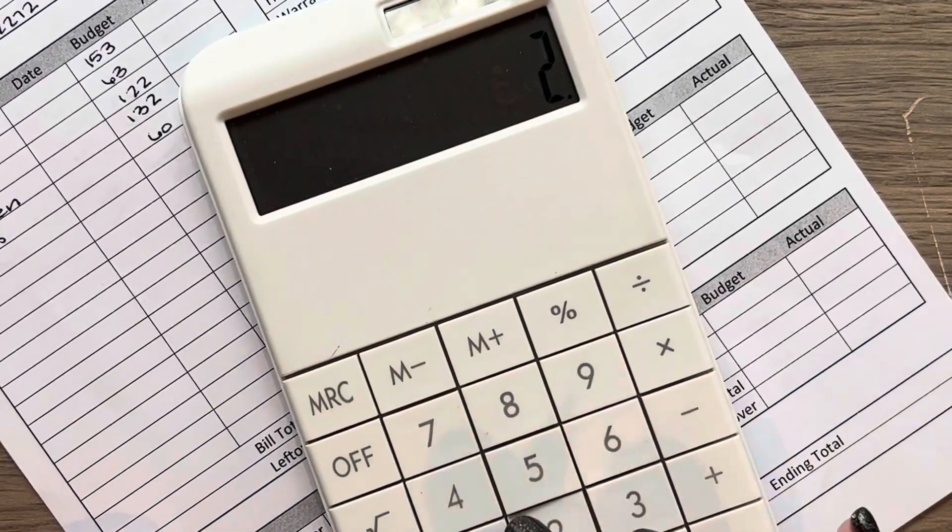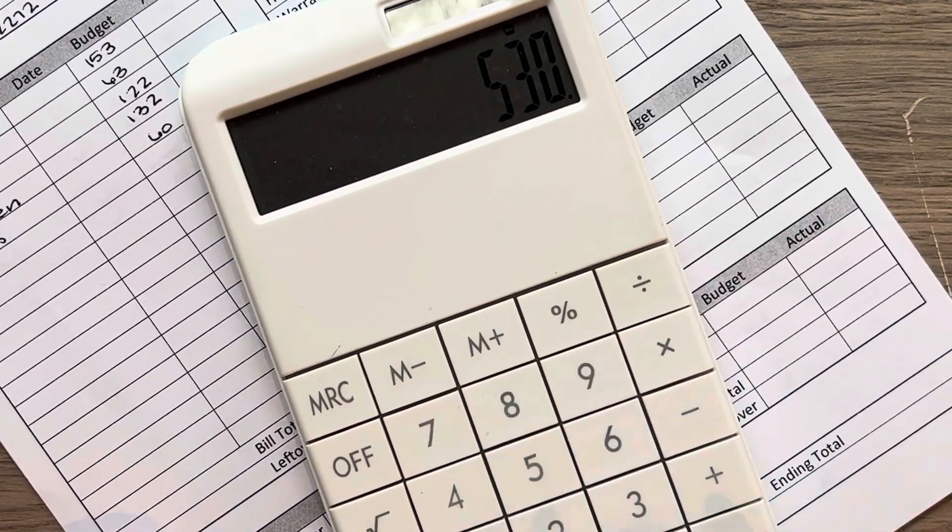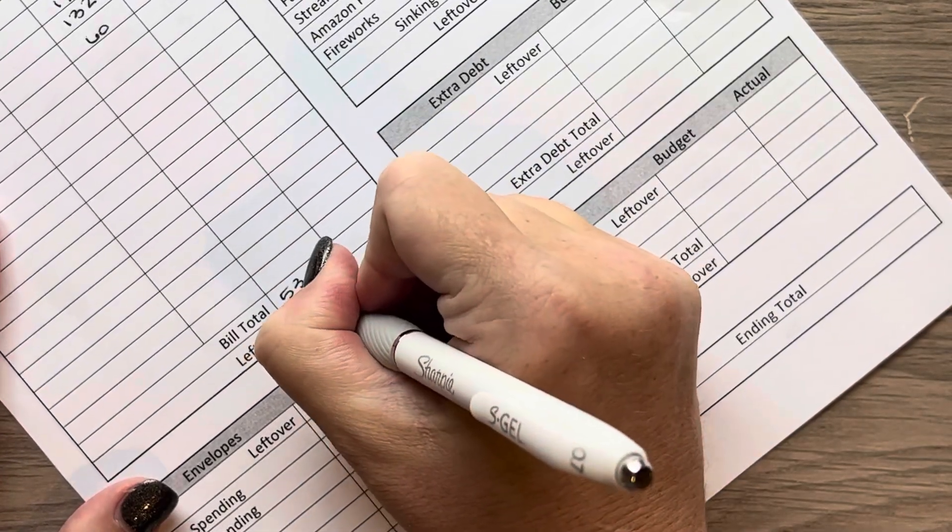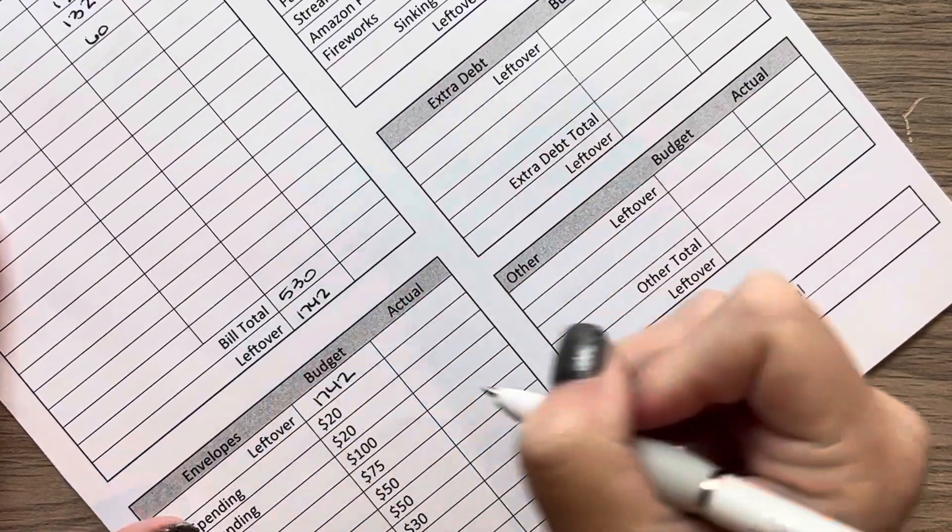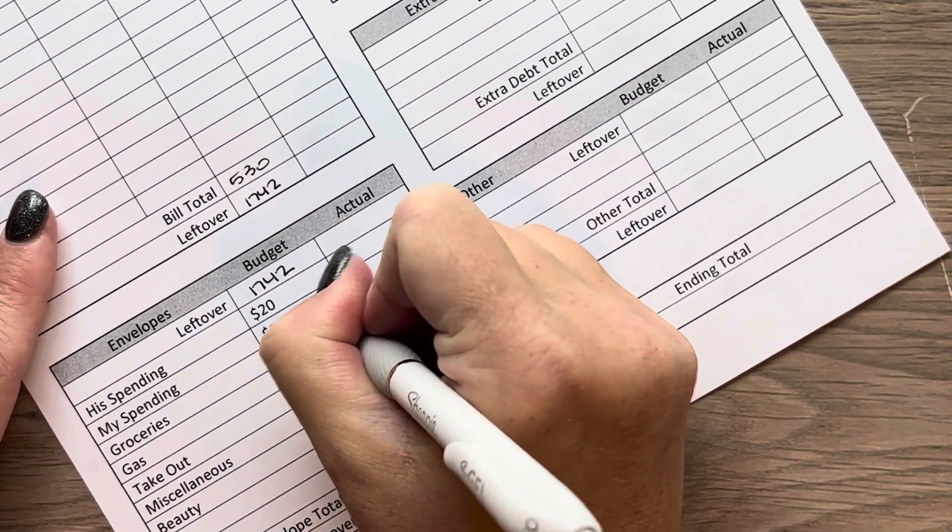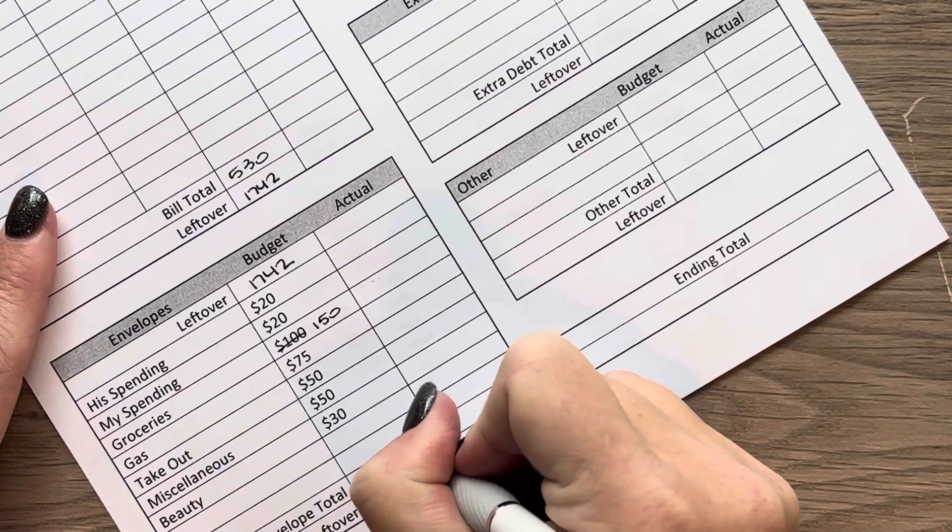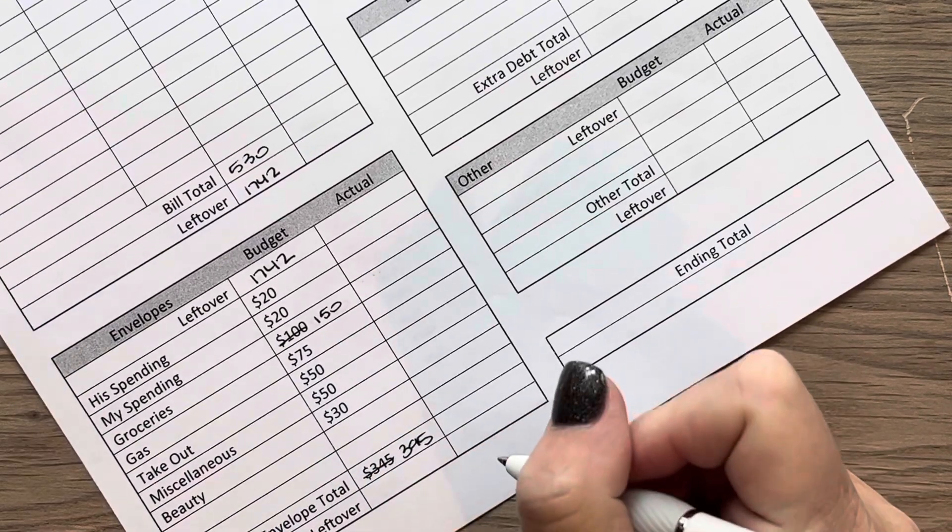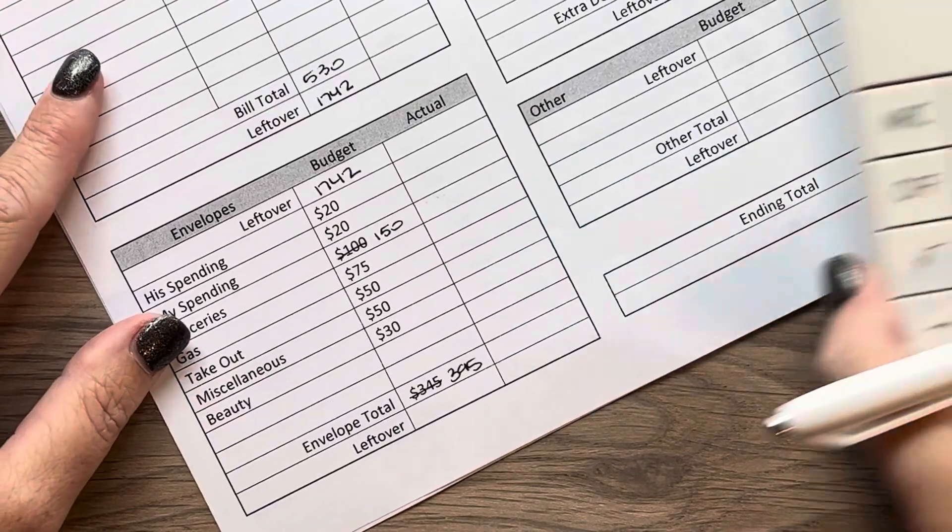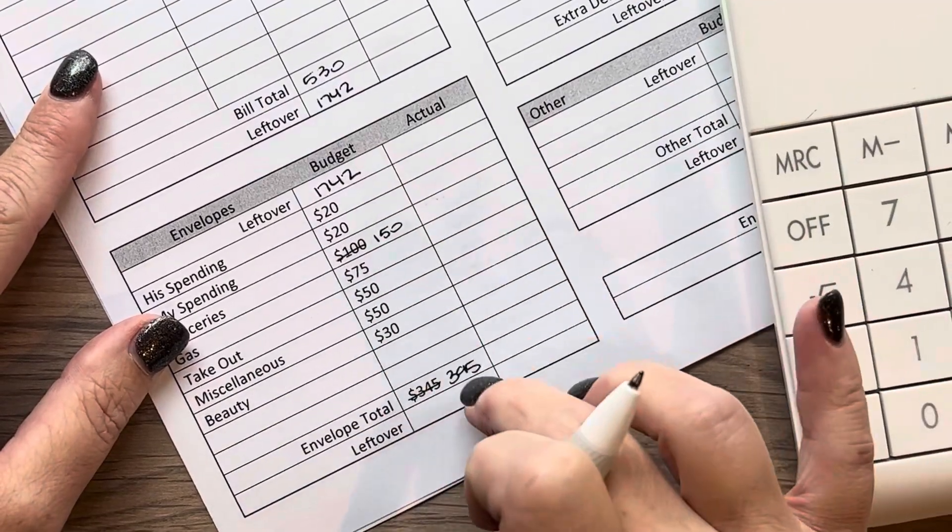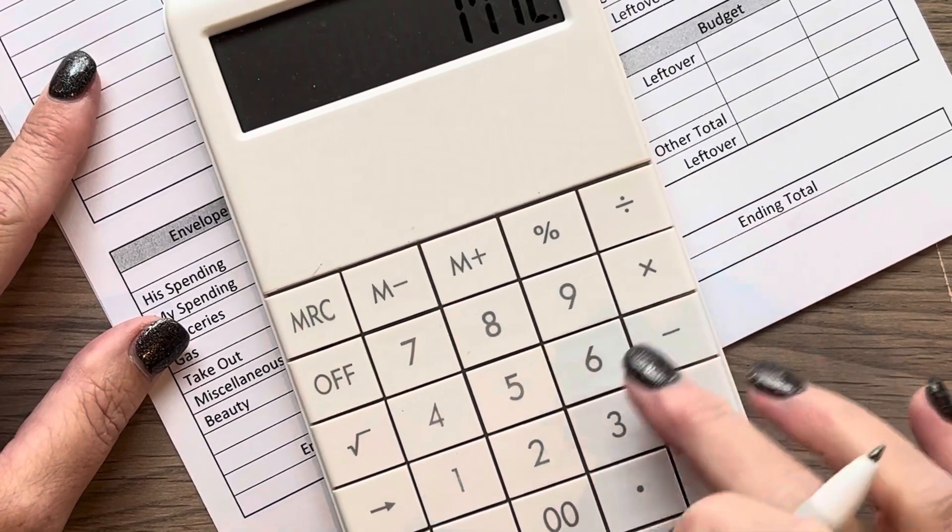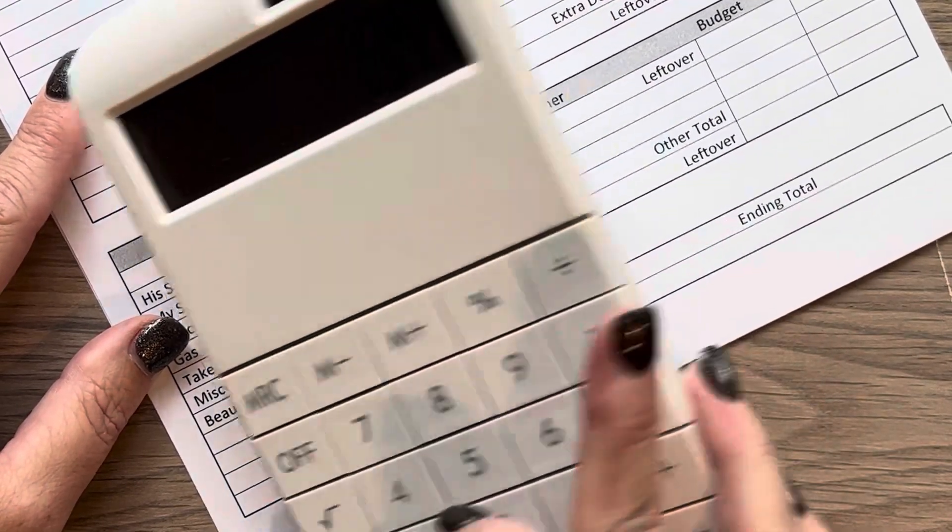So we take $2272 minus $530, which comes to $1742. I printed these sheets before I updated that we were going to increase our grocery budget. So these totals all add up to $395. So $1742 minus $395 comes out to $1347.